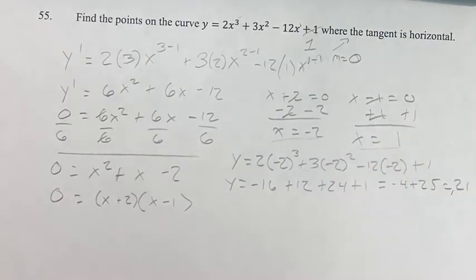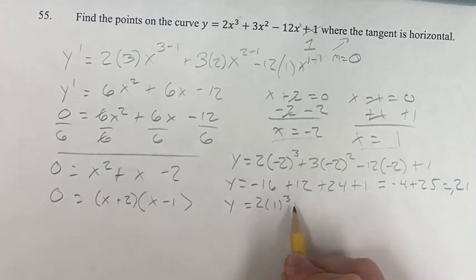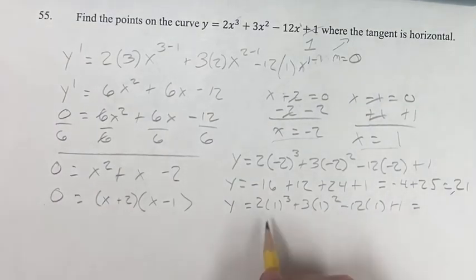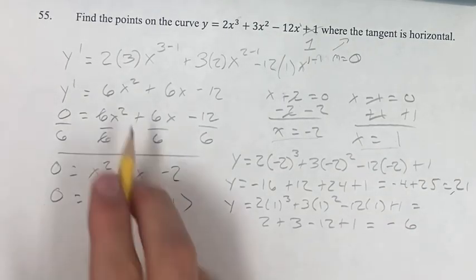We do the same thing by plugging in 1 for the other point. We get y equals 2 times 1 cubed plus 3 times 1 squared minus 12 times 1 plus 1. This equals 2 plus 3 minus 12 plus 1, which is 6 minus 12, which is negative 6.